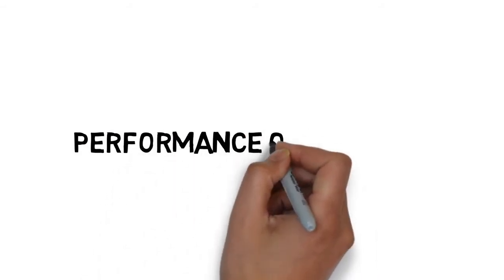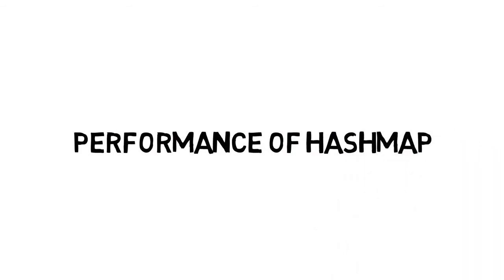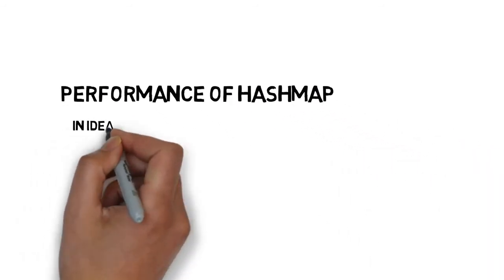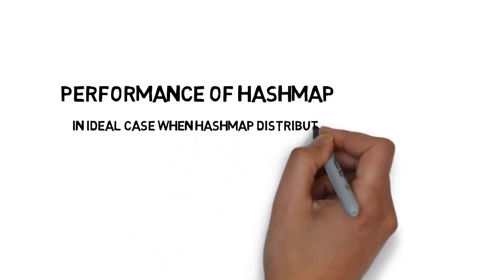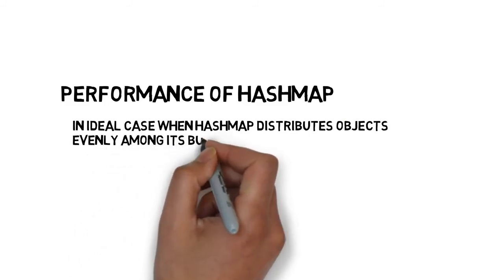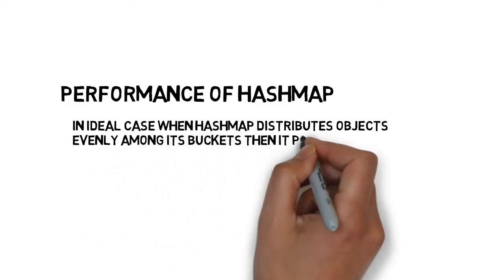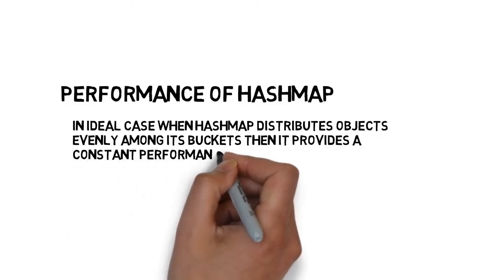We also need to understand the performance of hash map. In an ideal case when hash map distributes objects evenly among buckets, then it provides a constant performance of O(1) for get and put methods.